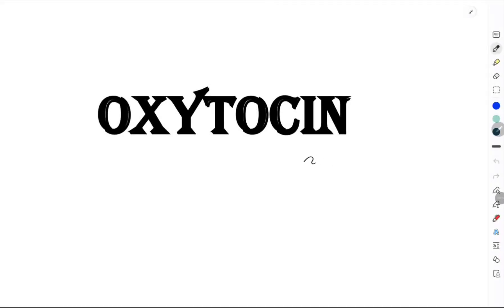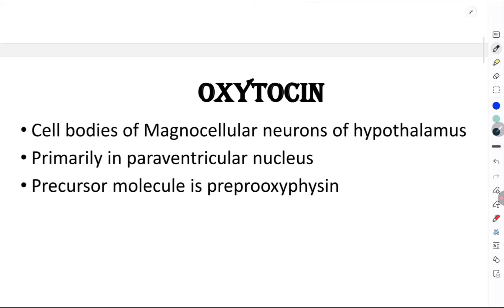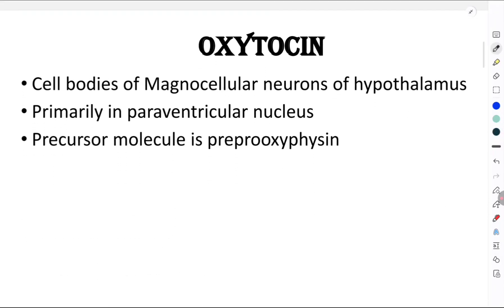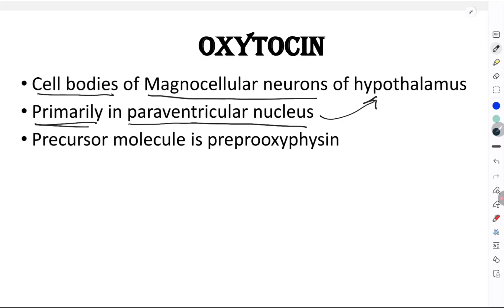In this video, let's understand one of the repeatedly asked questions about one of the hormones secreted from the posterior pituitary — that's oxytocin. Oxytocin, even though it is secreted from the posterior pituitary, is synthesized primarily in a nucleus called the paraventricular nucleus, which is present in the hypothalamus.